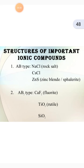The first type is AB type. In AB type, I have three examples: the first is NaCl, which we also know as rock salt; the second is CsCl; and the third is ZnS. The second type is AB₂ type. In AB₂ type, we have CaF₂ — CaF₂ is the fluoride — and also TiO₂ and SiO₂.